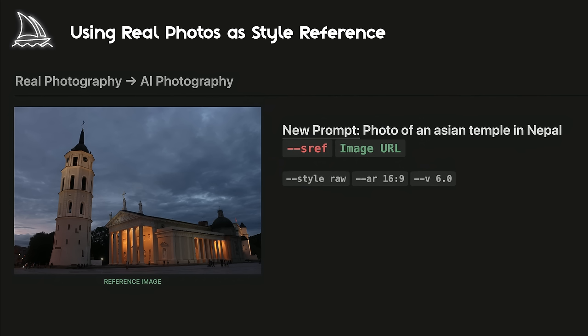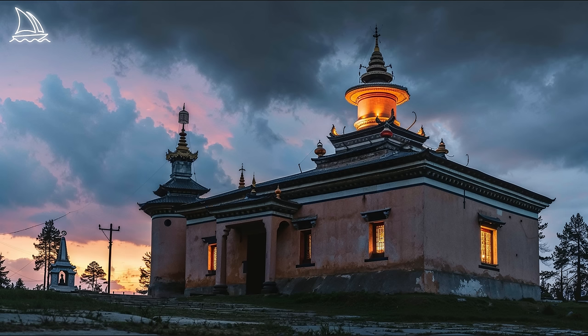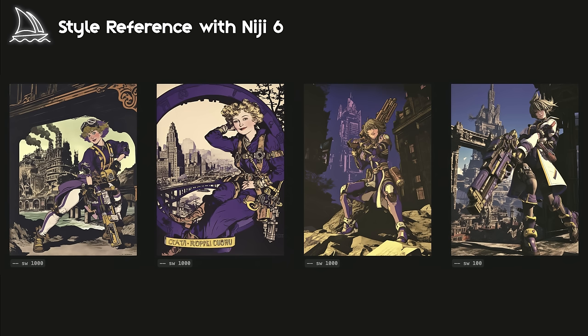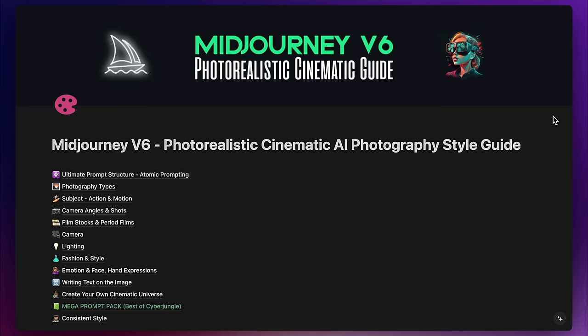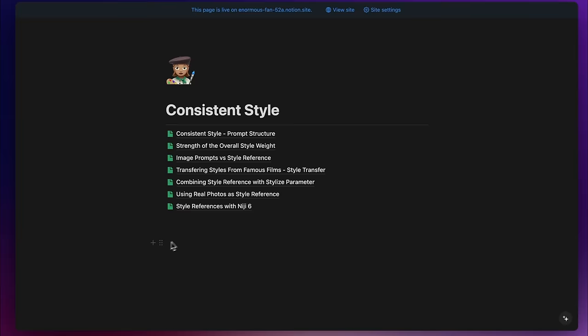Another way to use style reference is with real photos. While going through my photography archive, I found a photo I took in Vilnius, Lithuania years ago. I will upload my photo as the image reference to Discord, copy the link, and use the sref parameter to generate photos in my style from places I never visited. Just a reminder: you can use the style reference feature with Niji 6 as well. I particularly liked style weight 1000 because it perfectly captured the retro postcard look I was seeking. We can of course change direction to photo realism again. I've also added information from this video to my Midjourney V6 style guide as study notes, so you can easily copy-paste prompts and prompt structures.